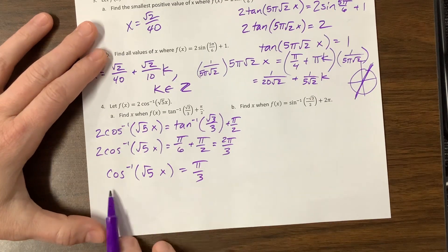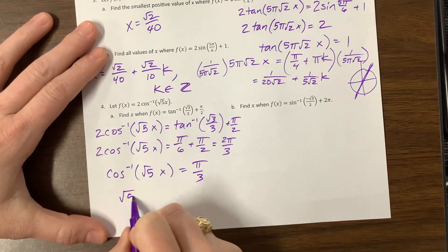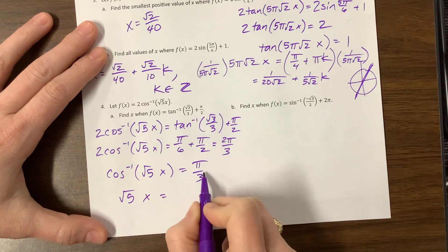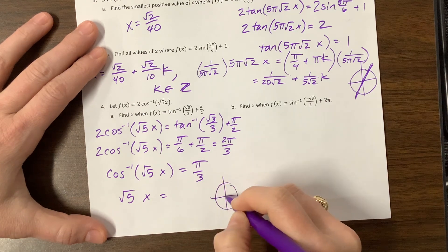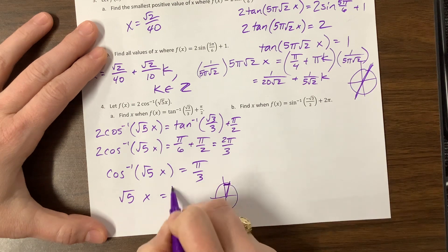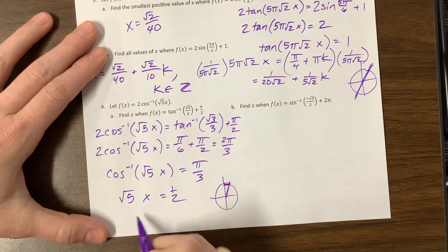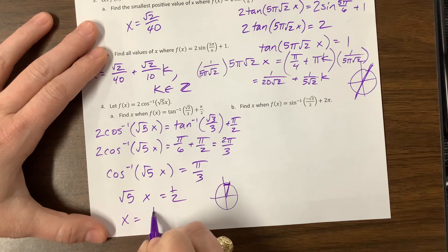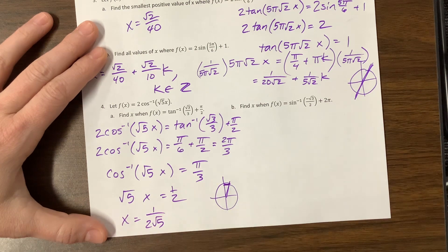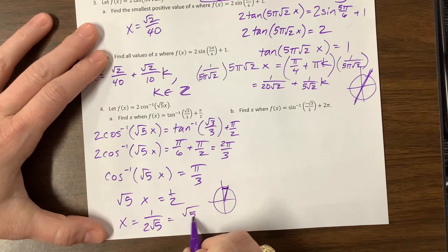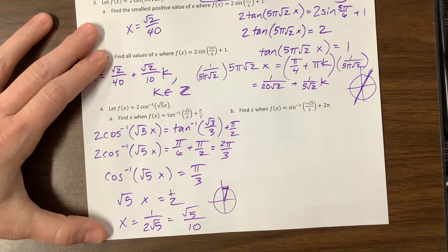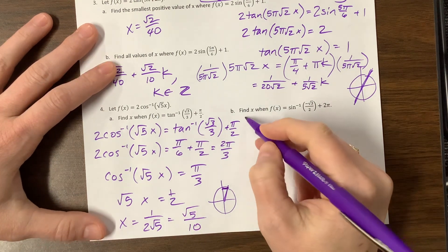Now I can divide away my 2 or multiply by 1/2, and I get cosine inverse of √5 times x equals π/3. Now in order to solve this, I have to take the cosine of both sides, and I get √5 times x equals cosine of π/3. π/3 is this one, the cosine is the x value, this is 1/2. Divide by √5, x equals 1 over 2√5. If they want us to rationalize, which they're likely to do, it becomes √5/10. That was kind of gross.